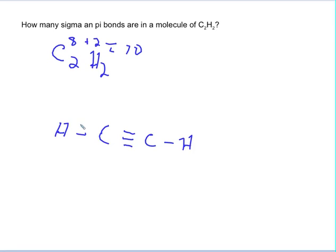Now for the sigma and pi bonds in C2H2: single bonds are always sigmas, and a triple bond has one sigma and two pi's. So this molecule has three sigma bonds and two pi bonds. That's how you figure out the number of sigma and pi bonds. Thank you.